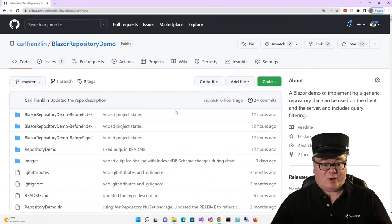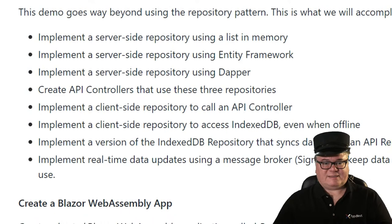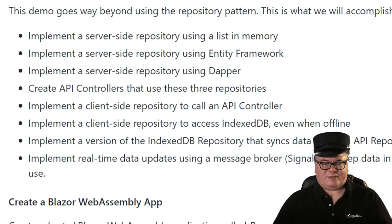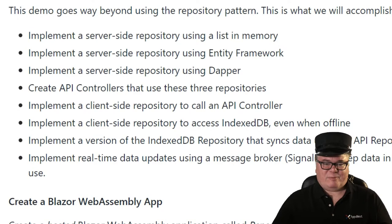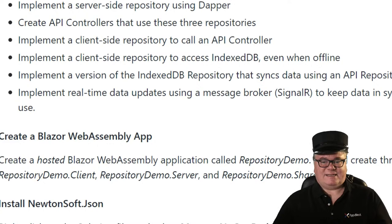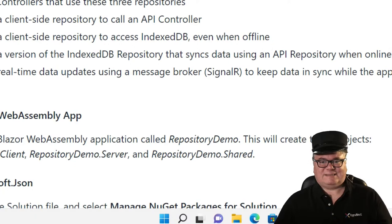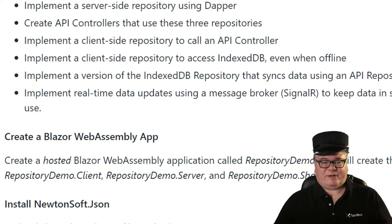So my Blazor repository demo is growing. If you take a look at github.com/CarlFranklin/BlazorRepositoryDemo, that's where everything is. I've updated the readme to show all of the things we're doing here: a server-side repository using a list in memory, server-side repository using Entity Framework, Dapper, an API repository on the client side, API controllers, a client-side repository to access IndexedDB even when offline — that was last episode — and now we're implementing a version of the IndexedDB repository that syncs data using an API repository when online. And finally, we're going to implement real-time data updates using SignalR to keep data in sync while the app is in use.